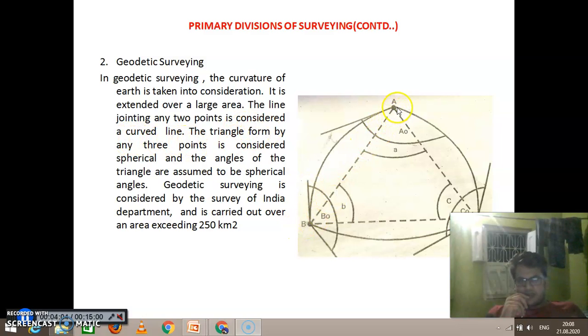The line joining any two points is considered a curved line. You see the line joining between two points A and B - in case of geodetic survey, this is a curved line.